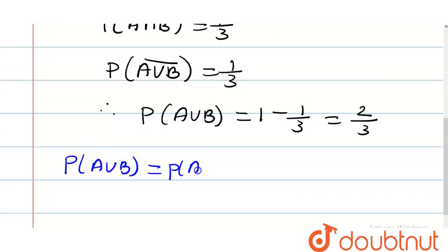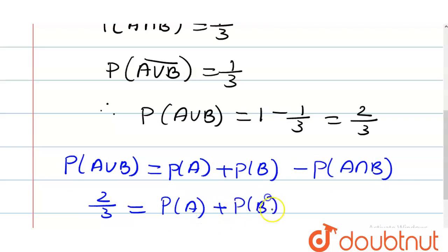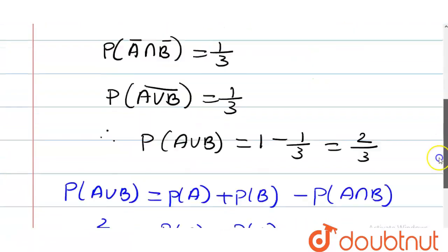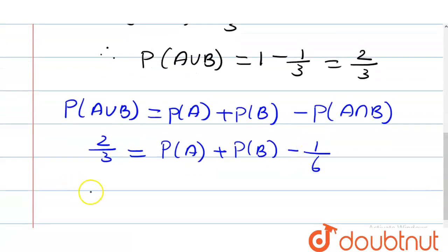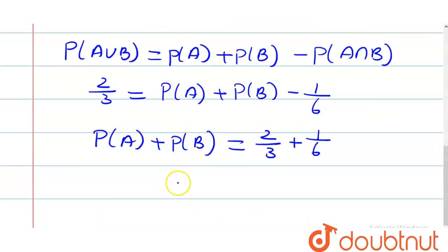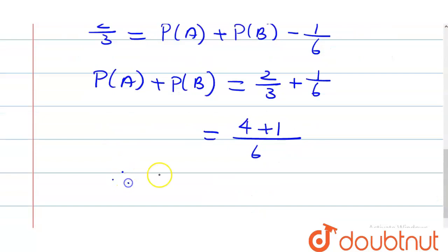Where P(A∪B) equals P(A) + P(B) - P(A∩B). Now this will be equal to 2/3 equals P(A) + P(B) - 1/6. Therefore, P(A) + P(B) equals 2/3 + 1/6, that will be equal to 5/6.